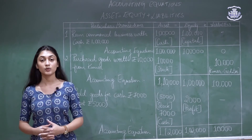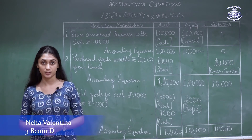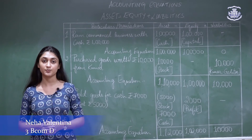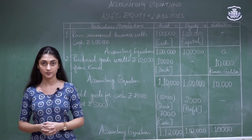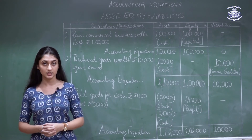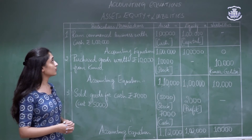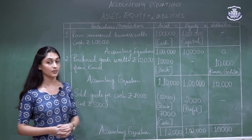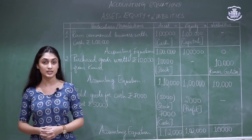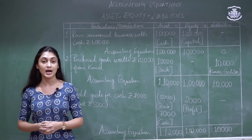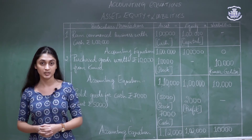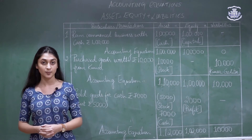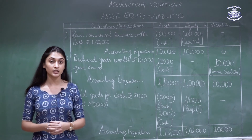Now we will look at the accounting equation, which is derived from the dual aspect concept. The accounting equation is: Assets = Equity + Liabilities. After every transaction, the assets will be equal to the liabilities. Here, liabilities can be of two forms: internal liabilities, often called the owner's fund, and external liabilities.